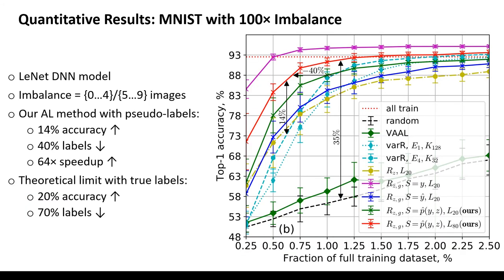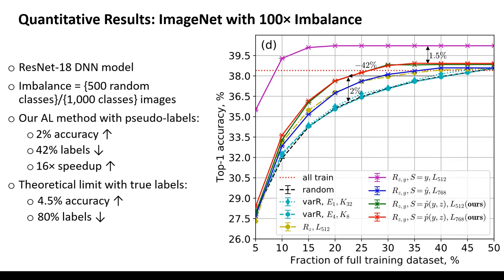For class-imbalanced data, we decrease labeling by 40% compared to state-of-the-art. We show this for MNIST Street View and ImageNet classification datasets.